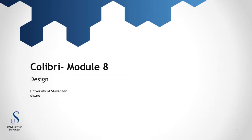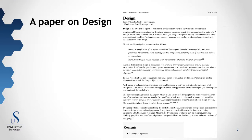Welcome to module 8 of the CoLibre project. This one is about design, and we have one paper on design. Of course we could have many, because design is an issue where there is a lot to be written. But we have chosen to take the more general paper from Wikipedia about design as a process.